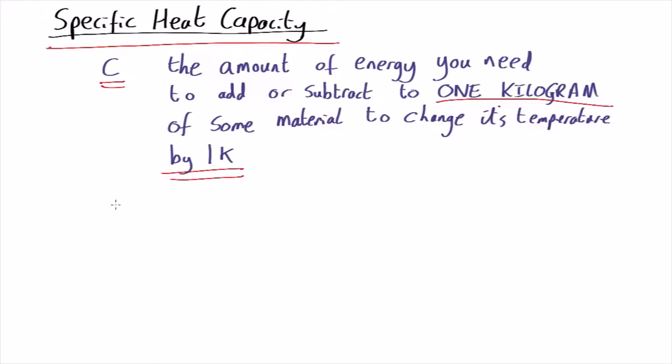If you write that down as an equation, the amount of energy you need to add or subtract is written as delta E. That triangle is a capital Greek delta, and that means the change in the energy, so it's the amount of energy you're adding or subtracting.